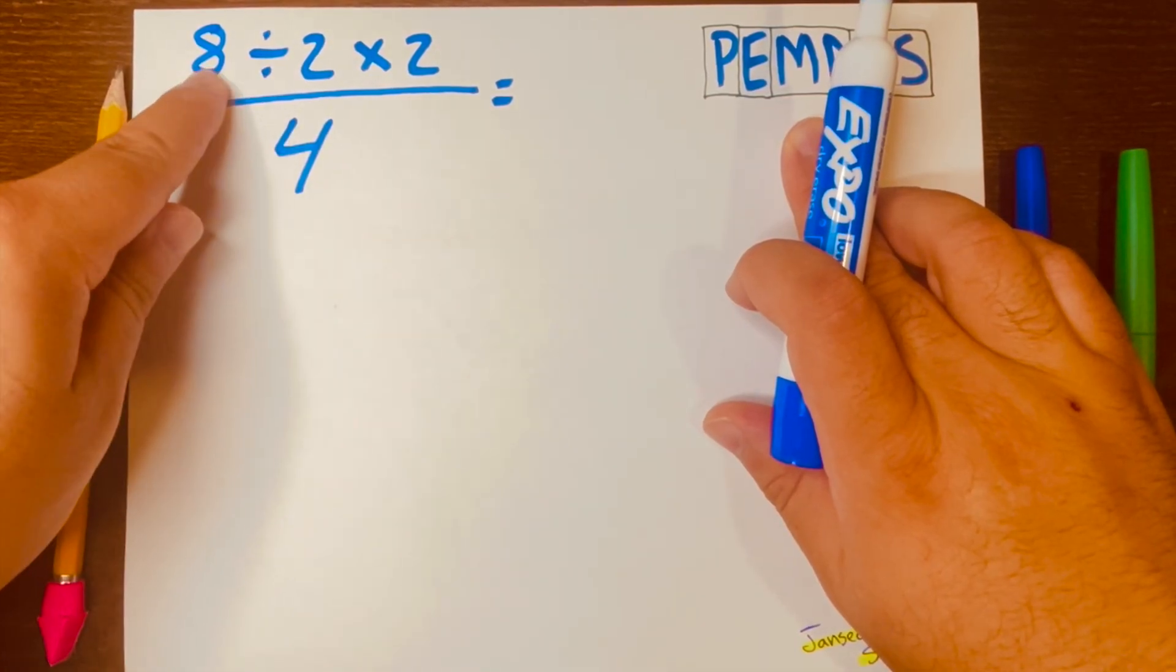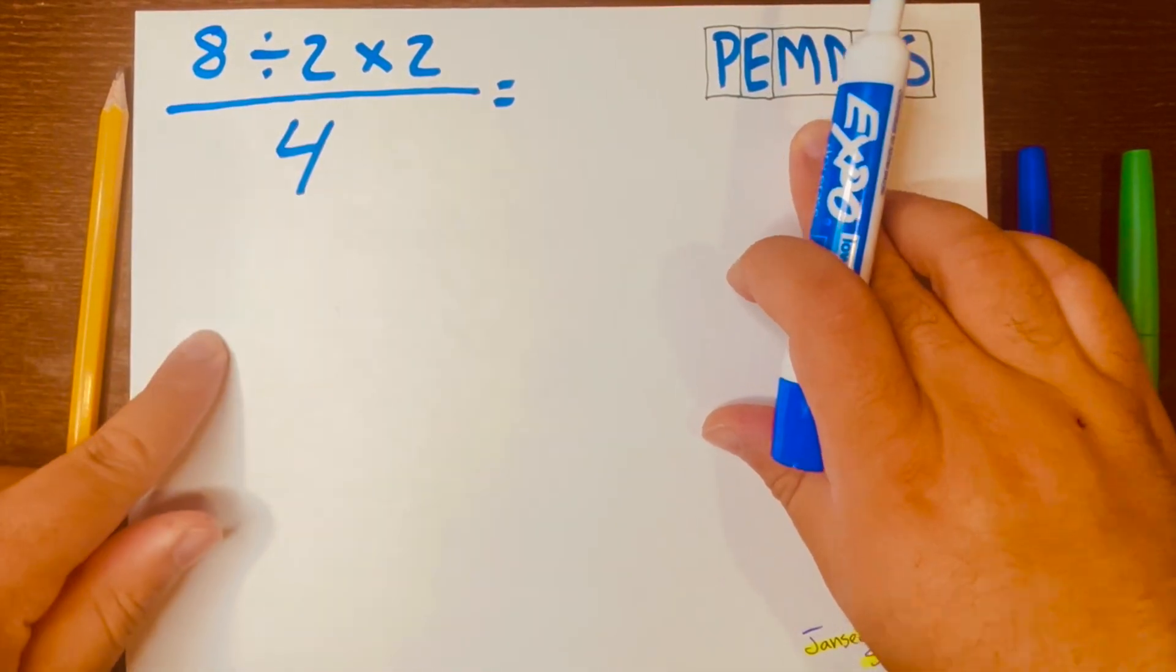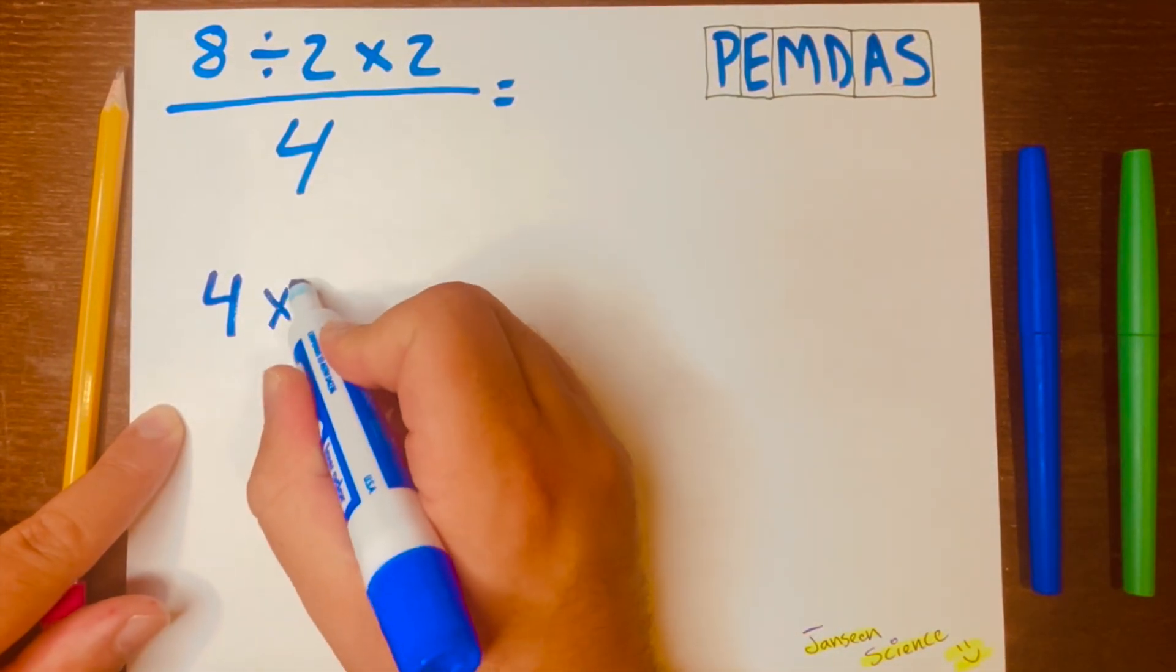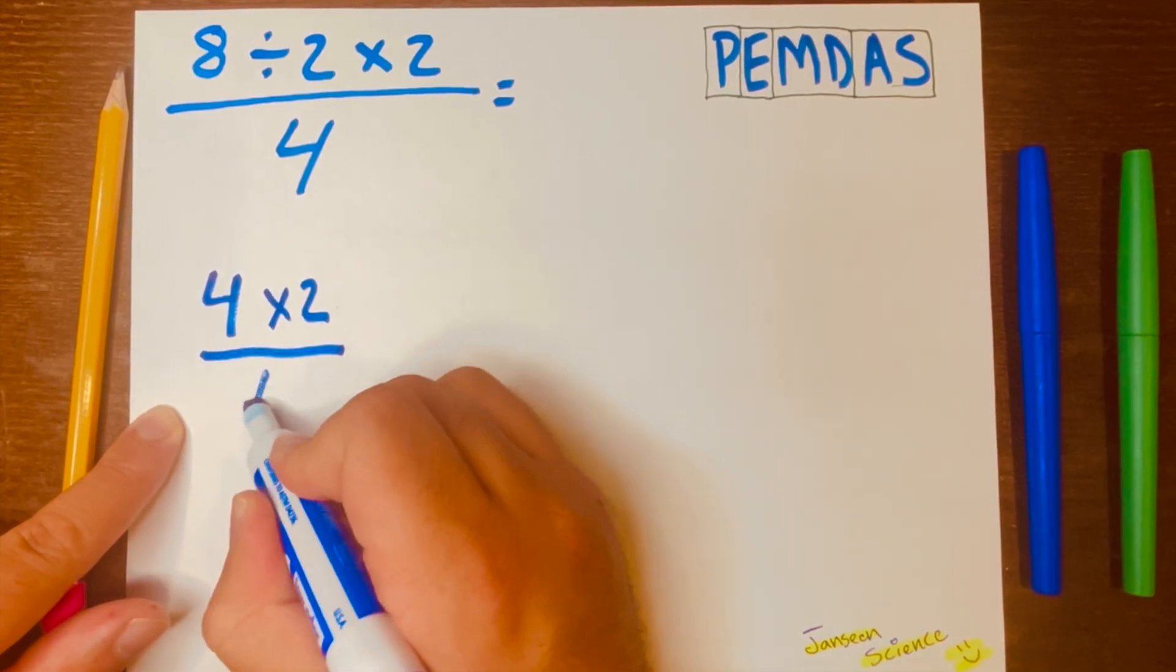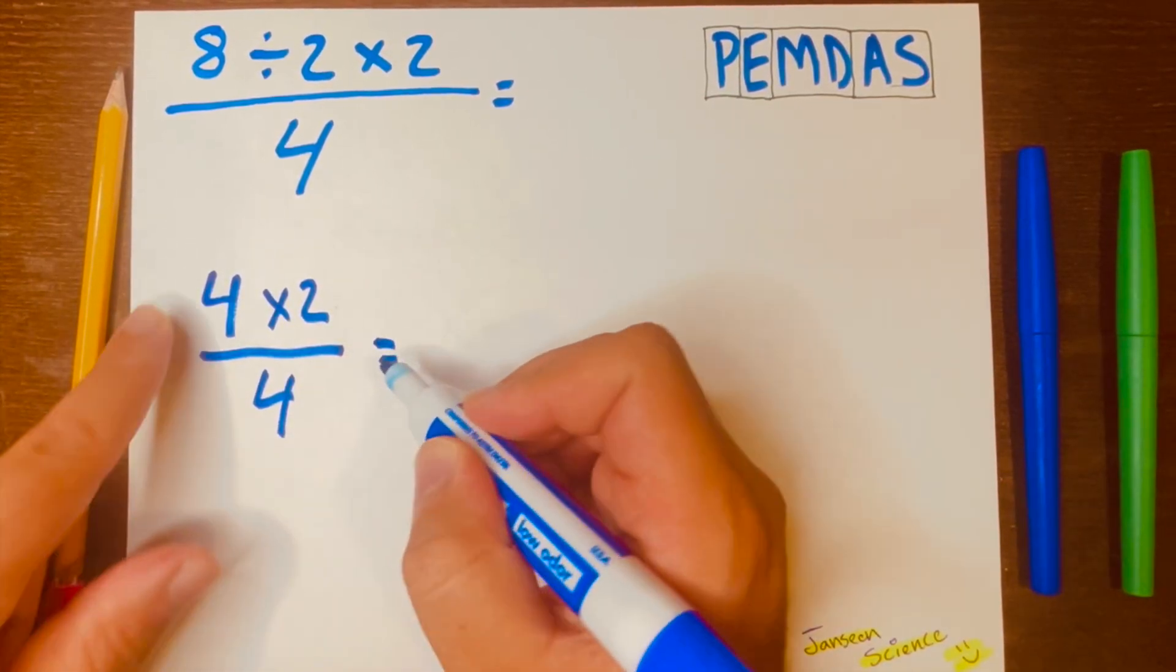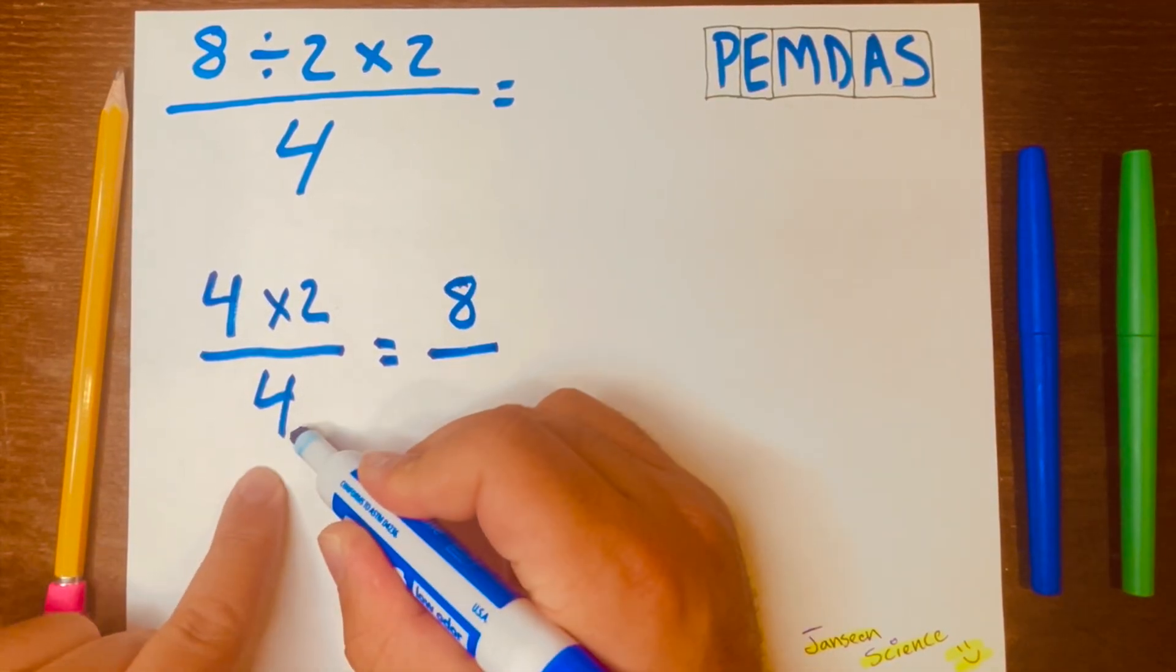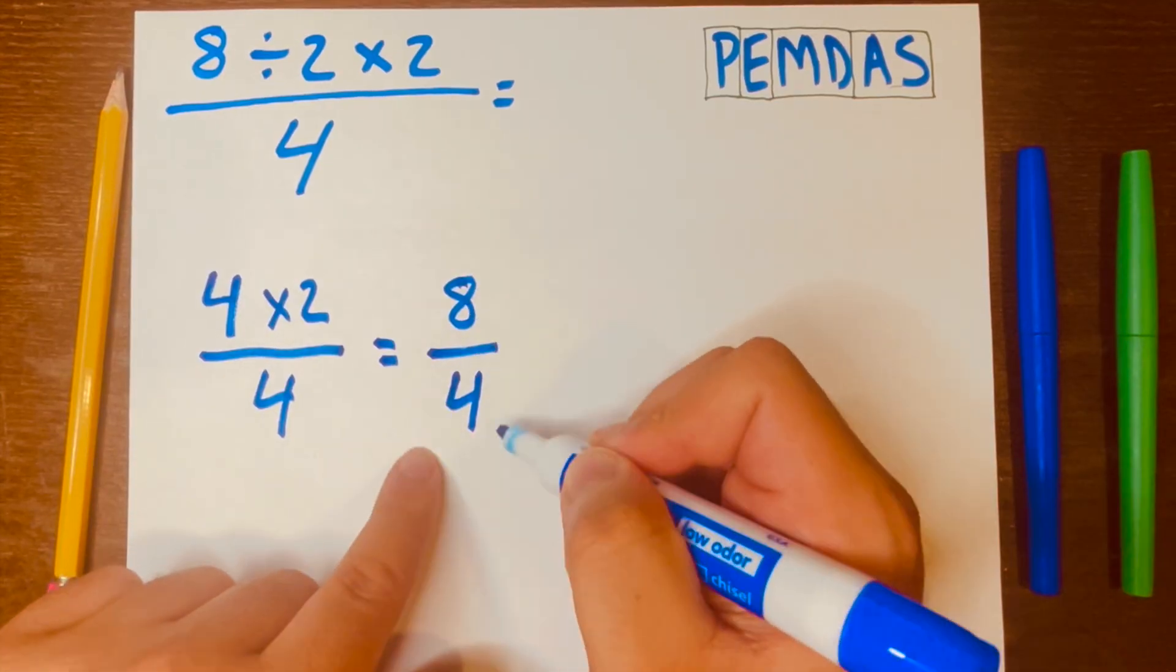So, 8 divided by 2 is 4, times 2, and then bring down the 4, and then 4 times 2 is 8. Bring it down here. So now we have 8 over 4.